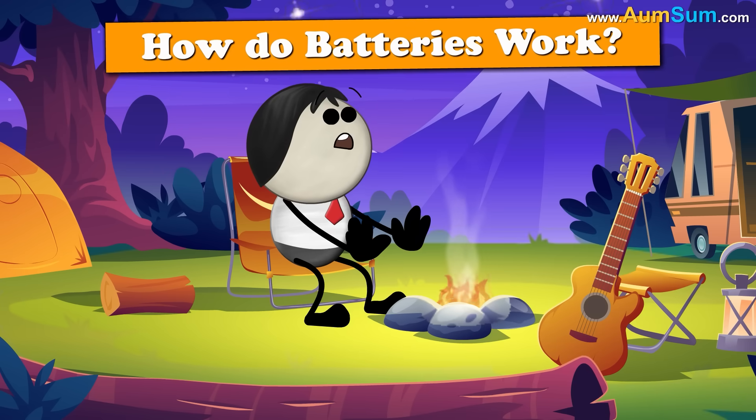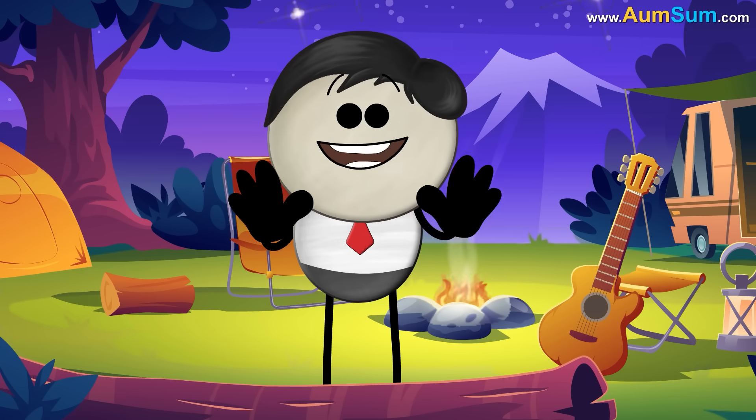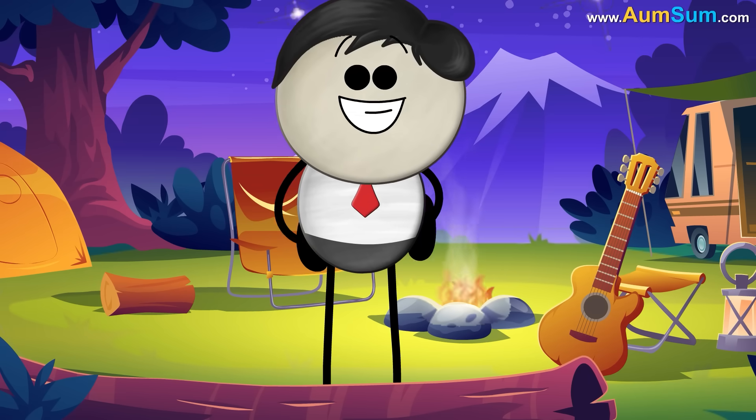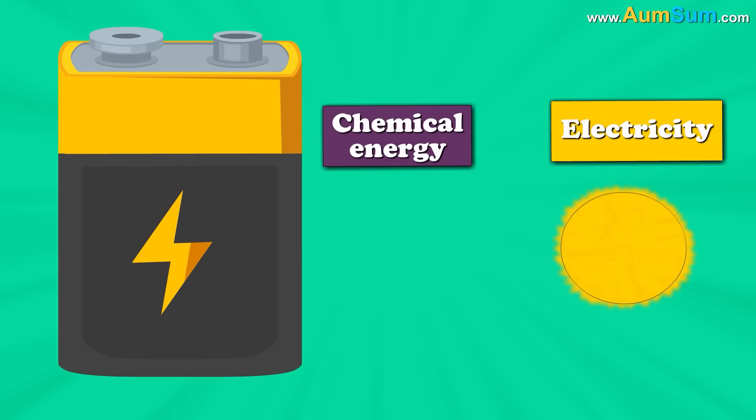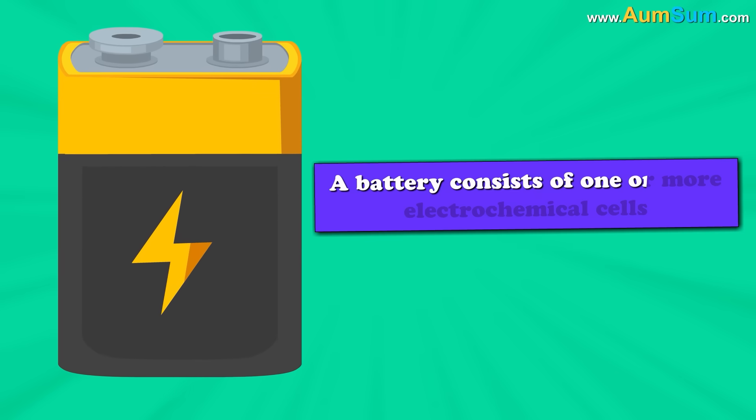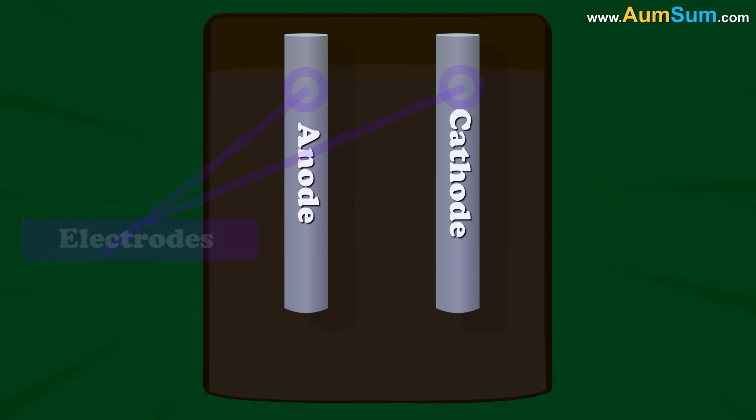How do batteries work? That is a secret. I can't tell anyone. A battery works by converting chemical energy into electricity. A battery consists of one or more electrochemical cells. An electrochemical cell consists of two electrodes separated by an electrolyte.